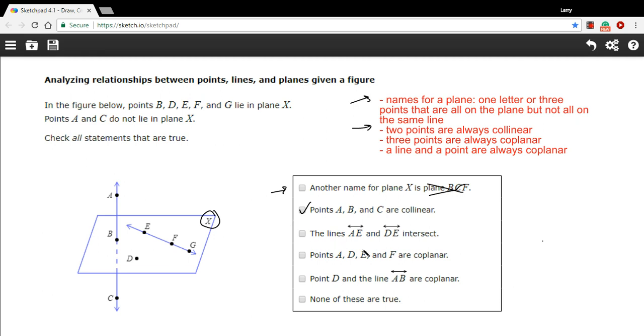All right, let's look at this next one. It says lines AE and DE intersect. Now, these lines are not drawn in on this diagram. However, you know that they would intersect because they share a point. They're going to intersect at point E.